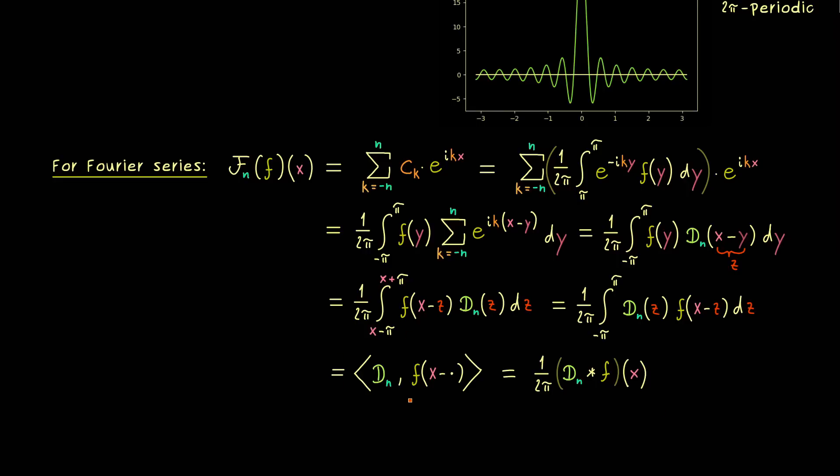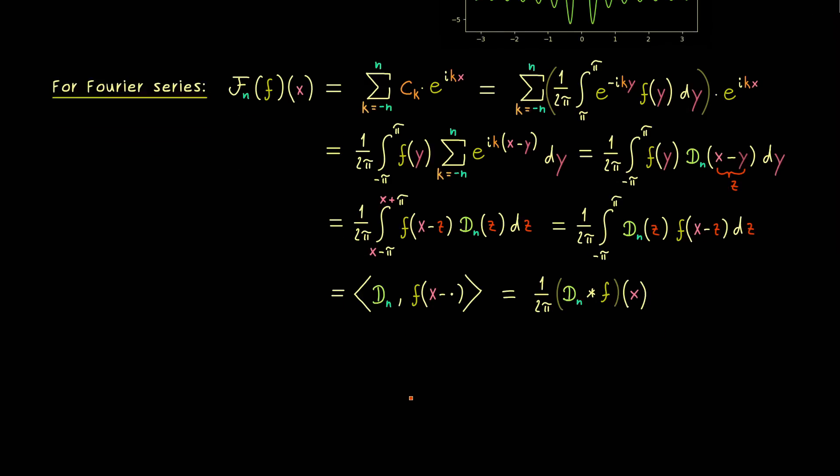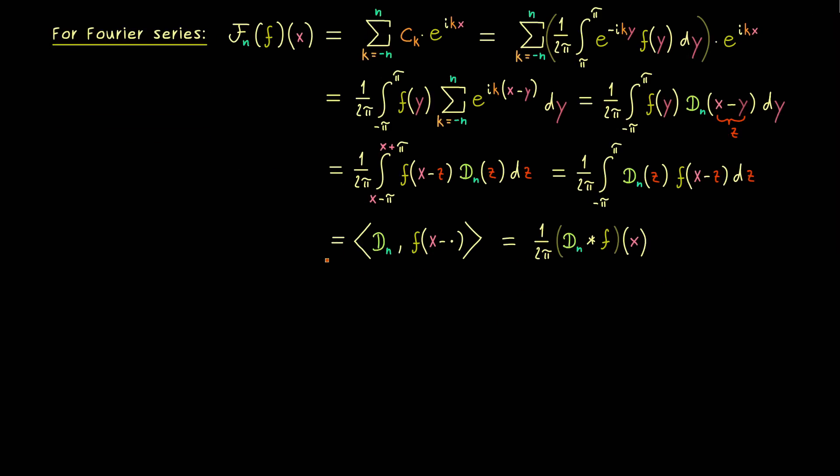And as the left hand side, the Fourier series, it has to be evaluated at the point x. So you see, we have two nice formulations for the Fourier series, which uses the Dirichlet kernel. Both things are quite helpful if we want to write down proofs concerning the Fourier series of f. But before we do these applications, let's first look at some nice properties of our Dirichlet kernel.